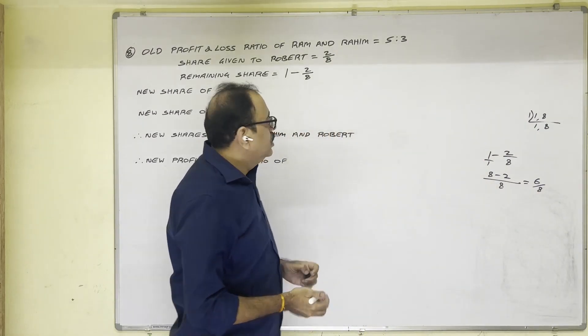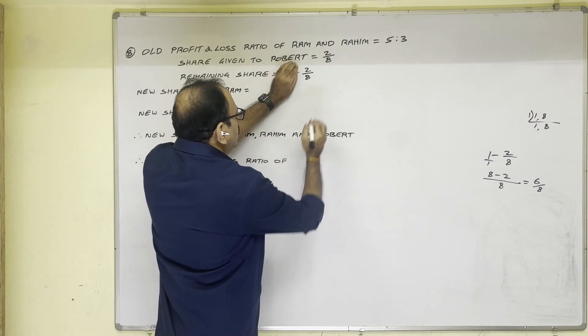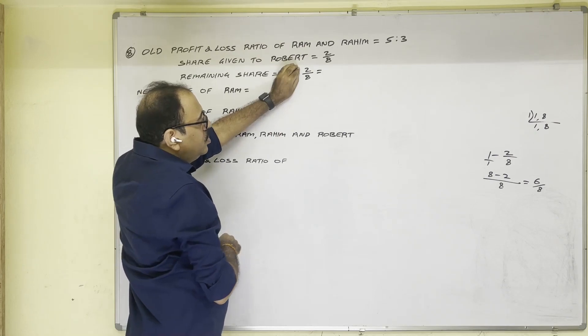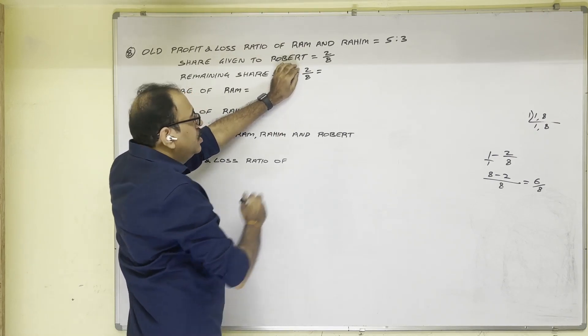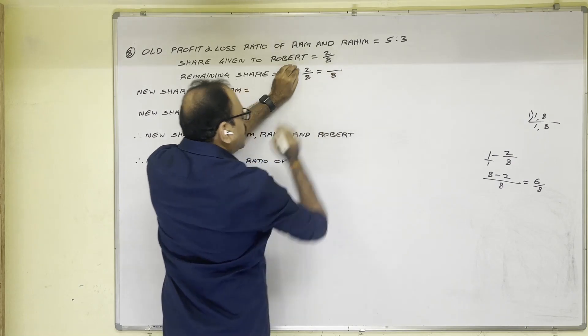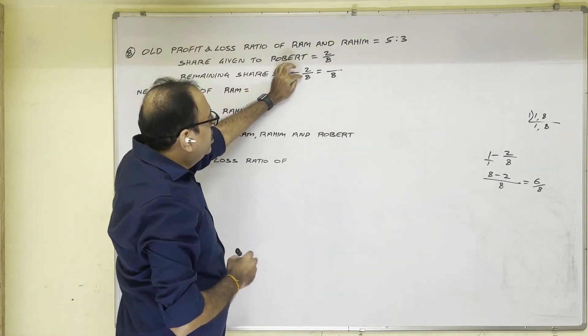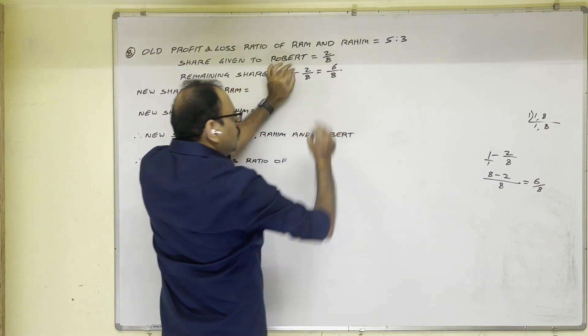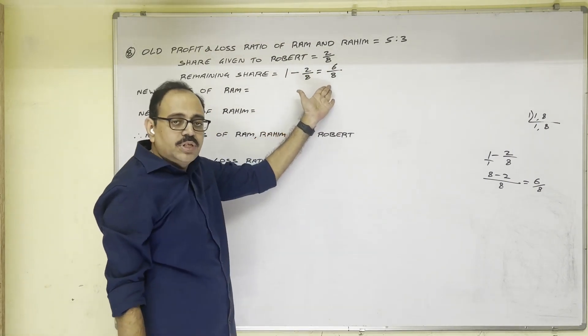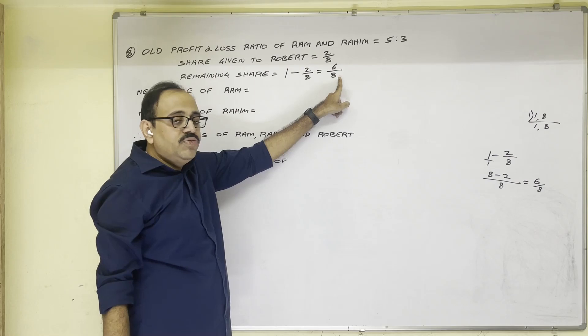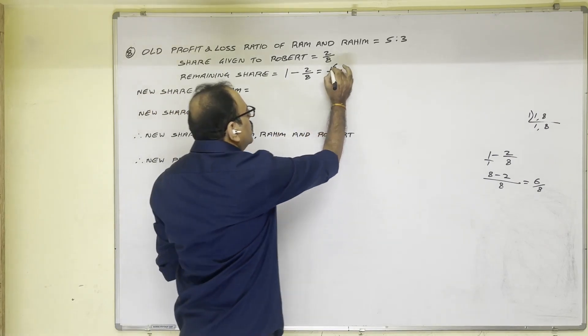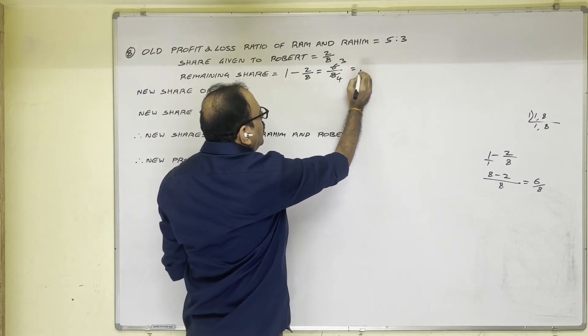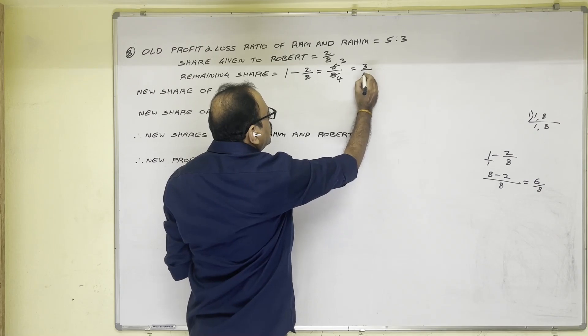But you need not to do like this. Simply forget about this 1 minus 2/8 is then. 2 is numerator, 8 is denominator. Denominator as it is you should write. And numerator is denominator minus numerator. 8 minus 2 is equal to 6. So 6/8 directly answer comes. And these 2 numbers we can divide with the 2. 2 threes are 6, 2 fours are 8. So finally, remaining share is 3/4.